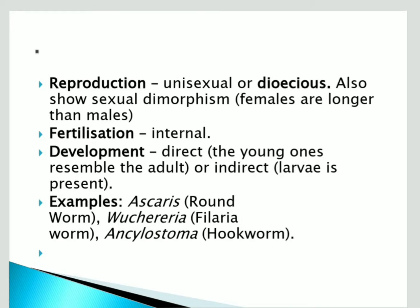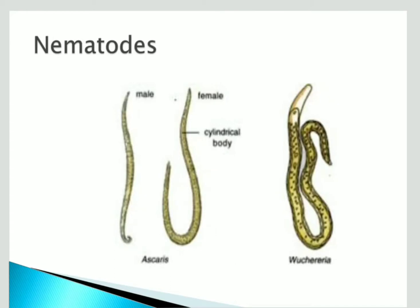The special characters are that reproduction is unisexual and they are pseudocoelomate organisms. Looking at the diagram, the smaller one is the male and the larger one is the female. The male shows a small curve at the basal region where reproductive organs are present. Both Wuchereria and Ascaris are shown here — both have a cylindrical worm body form. Thank you for watching.